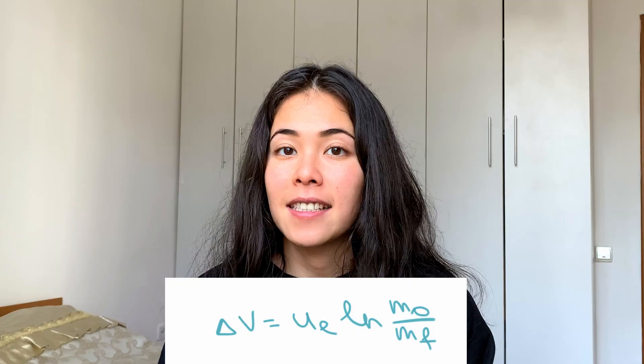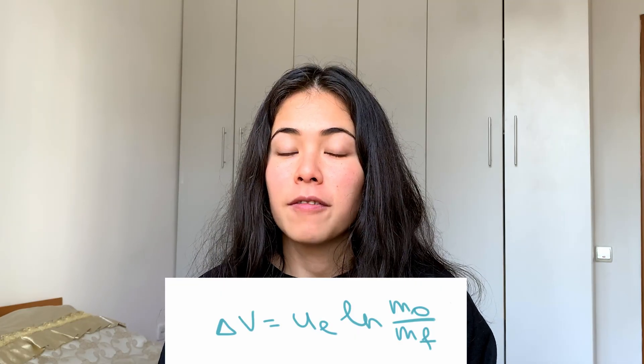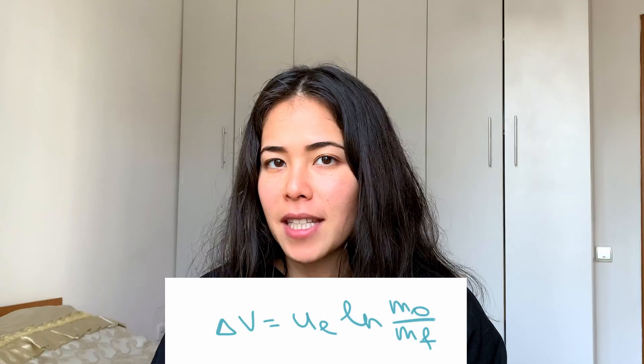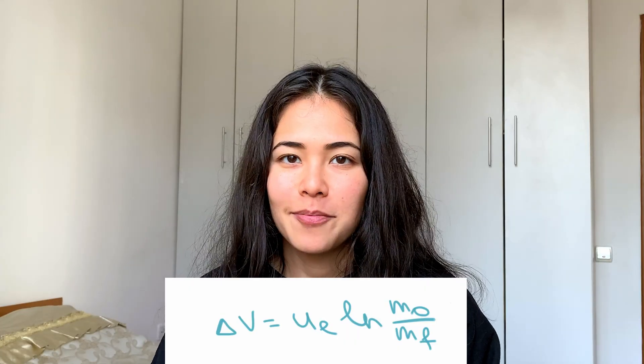This is the Tsiolkovsky rocket equation. It relates the change in velocity of the rocket to the difference in mass — essentially the amount of fuel burned. Delta-v is a very important parameter for planning space missions: if we miscalculate delta-v, we miscalculate the fuel needed, and if we can't reach the destination that can turn into a disaster, especially if there are people on board.